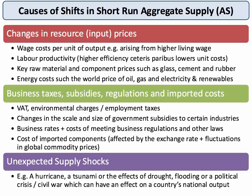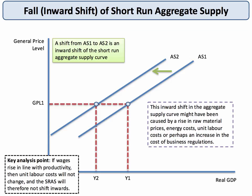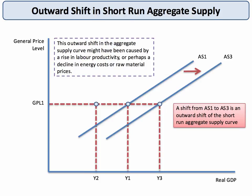Those are the main causes of shifts in aggregate supply. A fall in supply is called an inward shift — the aggregate supply curve shifts to the left — for example, due to an increase in raw material, energy, or unit labor costs. Conversely, an outward shift is a rightward shift, meaning producers and the economy as a whole can supply more at the same price level, perhaps due to a fall in energy costs or world raw material prices.